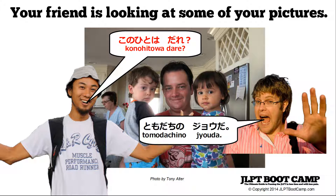You're with your friend, speaking casually, and you're showing your friend some pictures. Your friend asks you about the person in the picture. He asks, 'kono hito wa dare?' And you answer, 'tomodachi no joo da.'